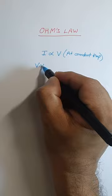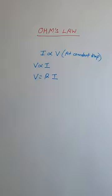Now we can also write this as V is directly proportional to I, or V equals RI, where R is constant. That is called the resistance of the conductor.